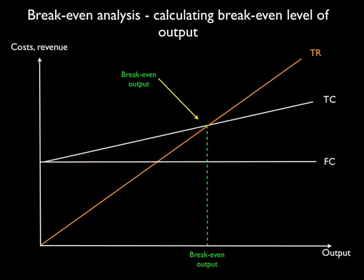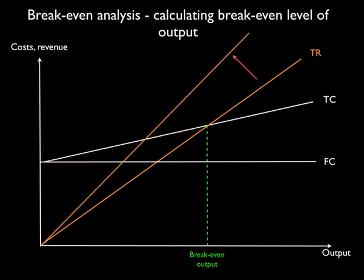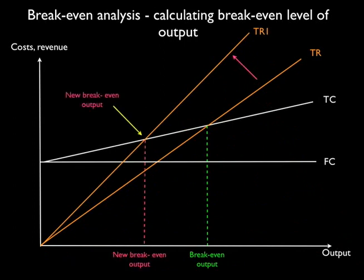Let's consider what happens if this firm decides to increase price. What we see is that the TR line pivots to the left and we have a new lower break-even level of output. This obviously has